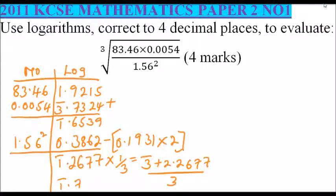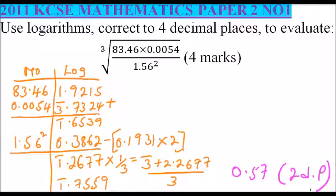When you get the antilogarithm of bar 1.7559, you get 0.057. So the answer is 0.057 to two decimal places. That is how you work out that question — I hope you know how to work with logarithms, which you learned in form two.